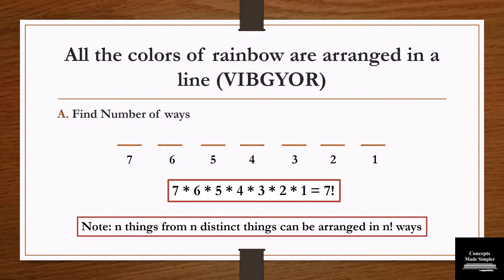We have a very important note here: n things from n distinct things can be arranged in n factorial ways. This means that if you have n things and you have to select and arrange all of them, it can be done in n factorial ways. This note can be really handy, so please make a note of it.